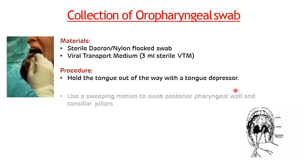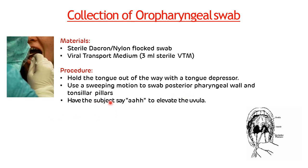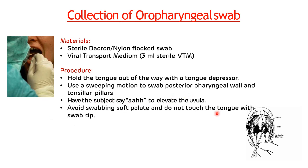The procedure for oropharyngeal swab collection is: put the tongue out of the way with a tongue depressor, then use a sweeping motion to swab the posterior pharyngeal wall and tonsillar pillars. Have the subject say 'ahh' to elevate the uvula. Avoid swabbing the soft palate, do not touch the tongue with the swab tip, and place the swab in viral transport medium.